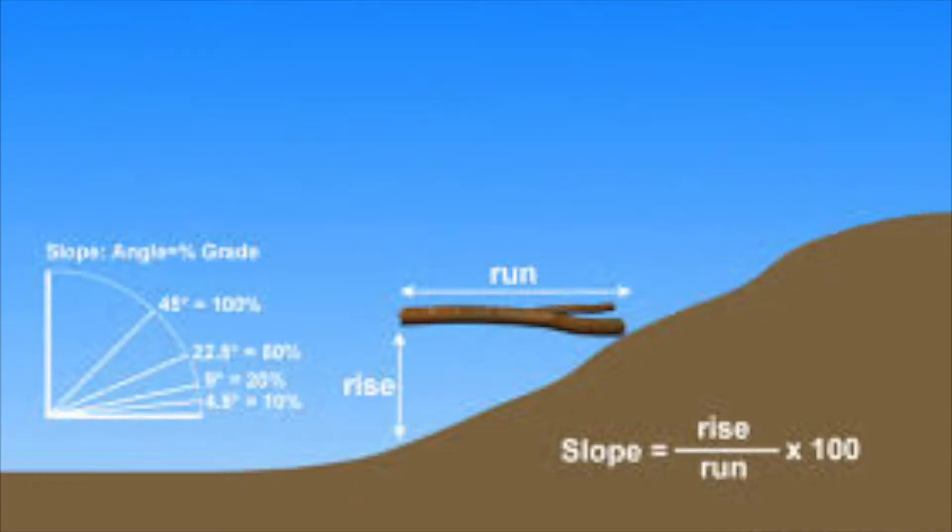The first variable we will talk about is slope. Slope is very important because it is the steepness or gradient of the channel, and even small changes in slope can cause a very different outcome for Manning's equation than you might expect.